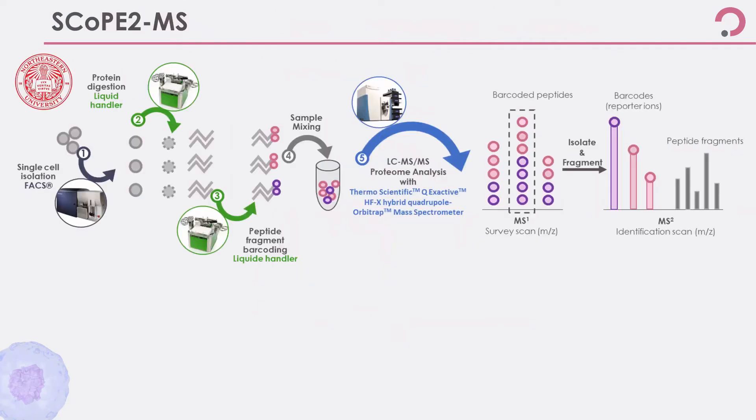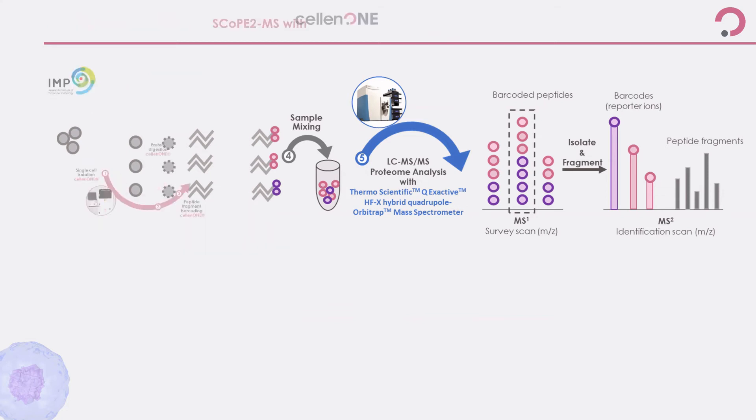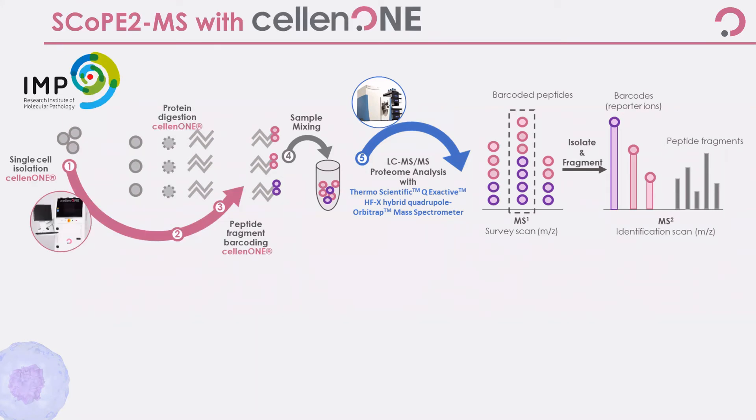The state-of-the-art in single cell mass spec is the SCoPE tube preparation. Typically this requires a FACS sorter for single cell isolation and a separate liquid handler for protein digestion and peptide barcoding before introduction to the LC-MS-MS. The cell-in-1 eliminates the need for multiple preparation instruments, simplifying the workflow and allowing for further volume miniaturization.